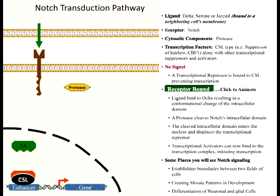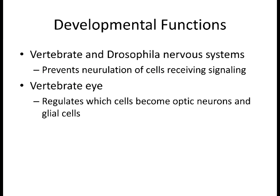Primarily in nervous system development—some optic nerves and glial cells in the eye as well—most of this is neuron development. That's the primary role of Notch-Delta signaling.